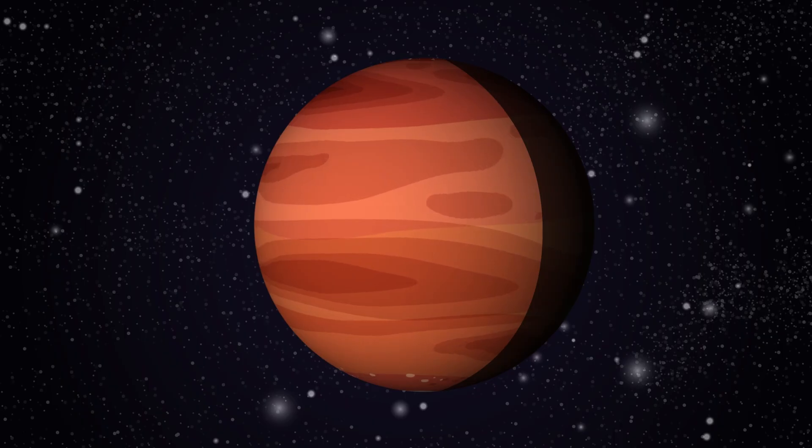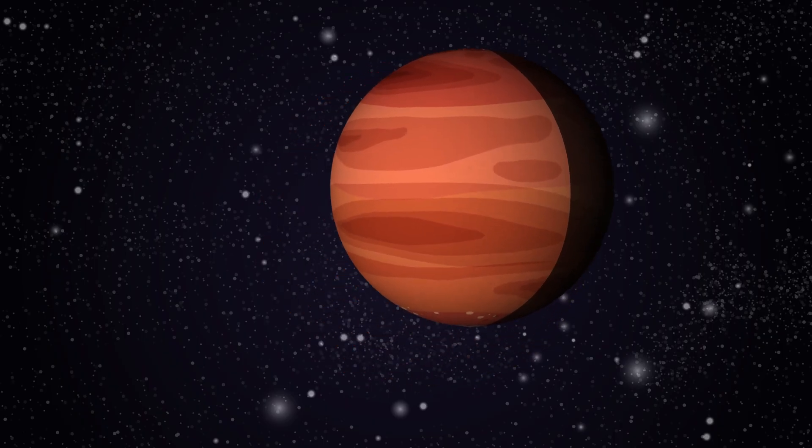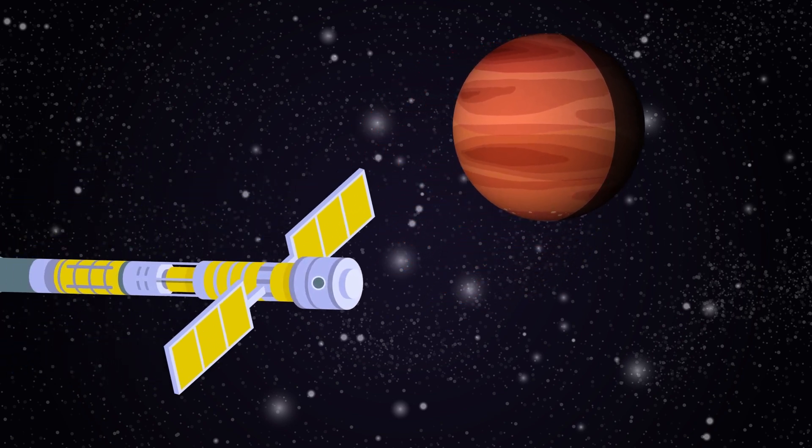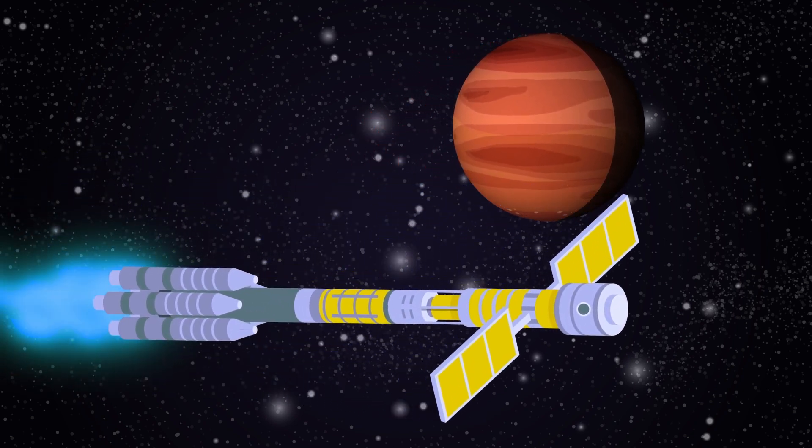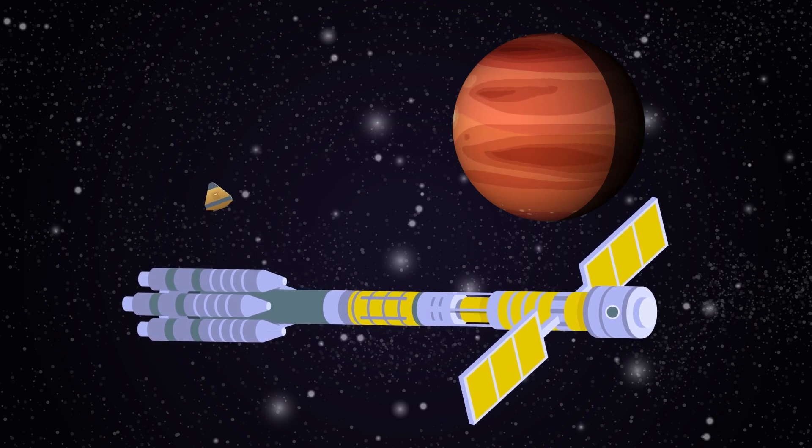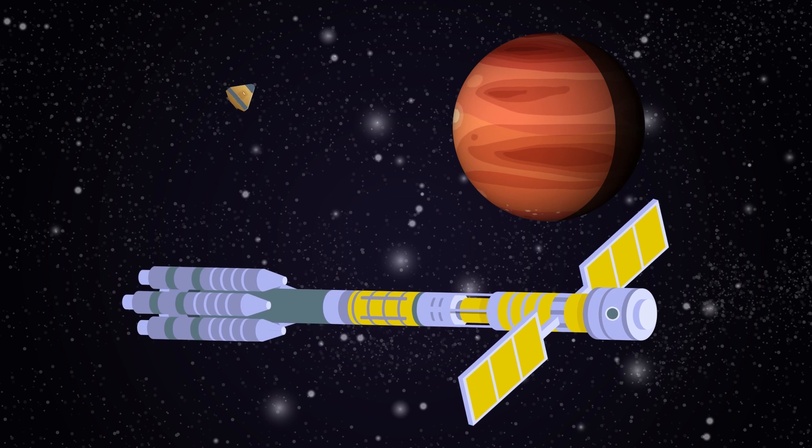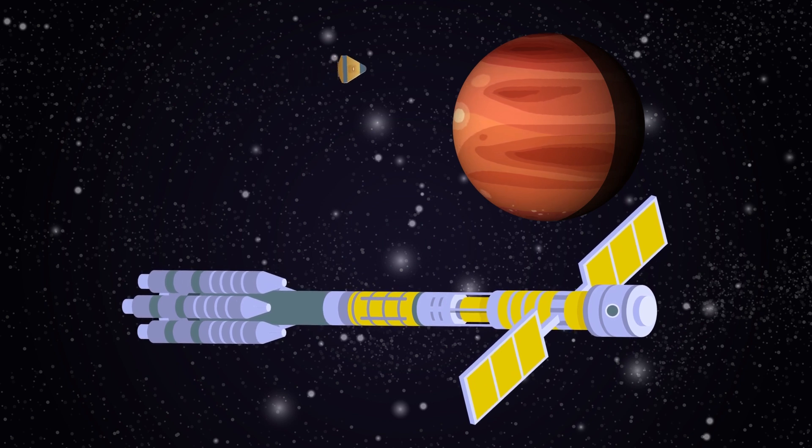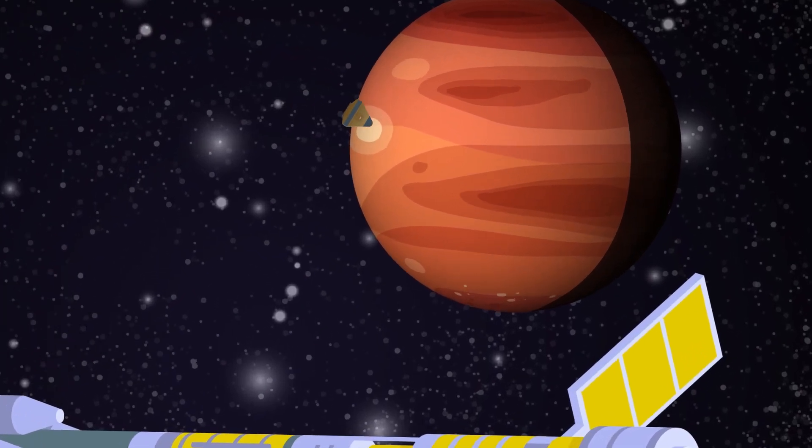When the spaceship finally arrives, it probably won't land. It's way too big to land safely on the surface. Instead, it'll circle around Mars, acting as a space station. Crews would likely descend in small capsules designed to land on the dusty surface.